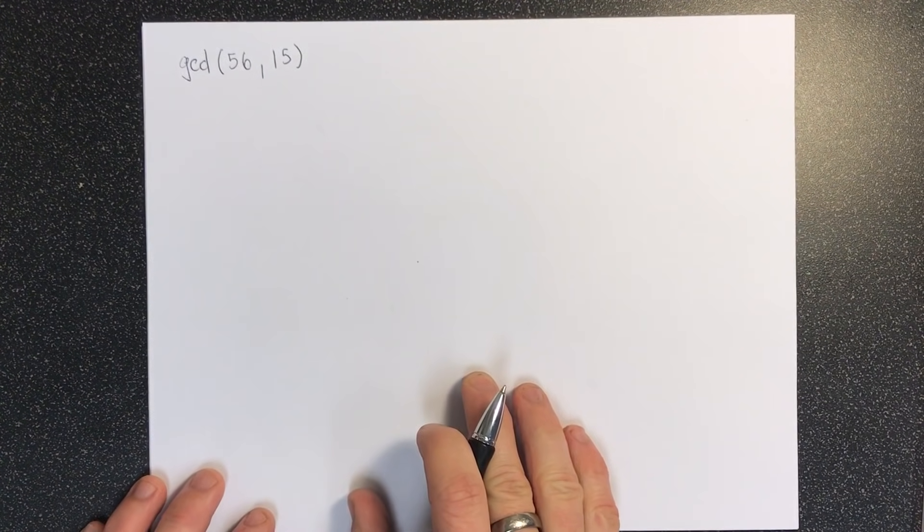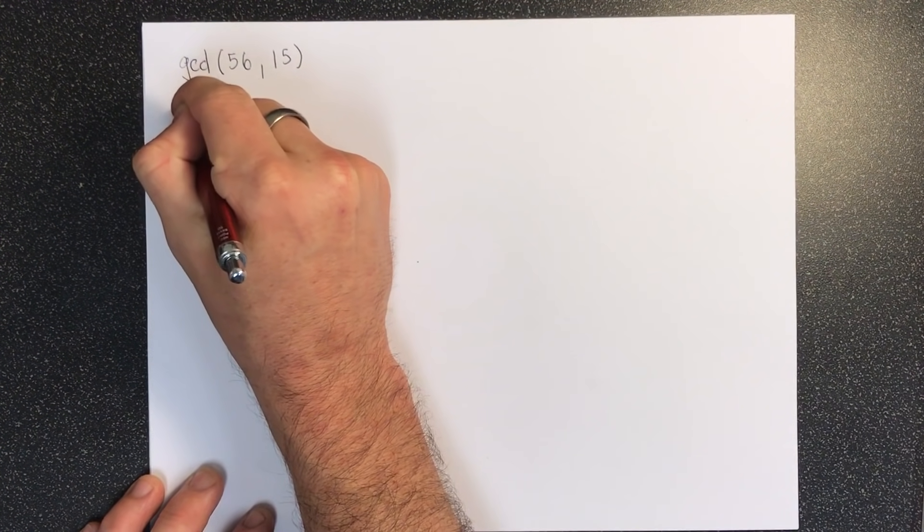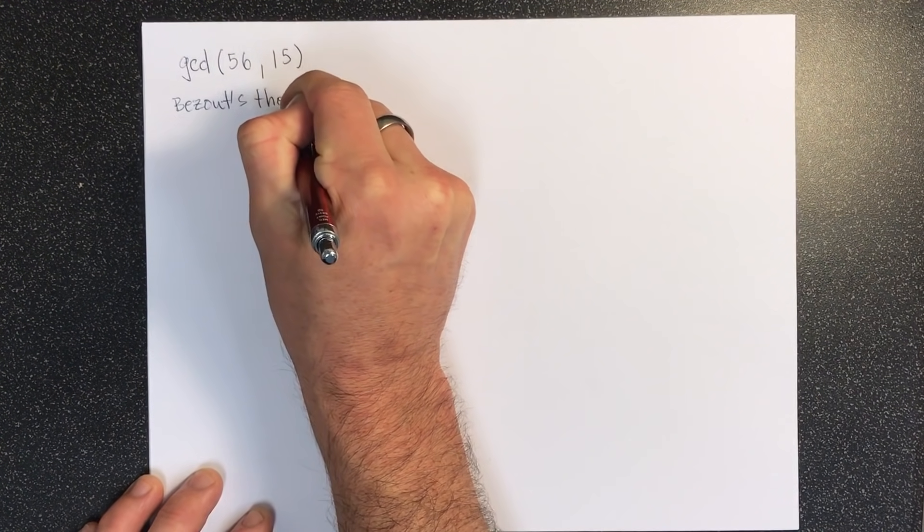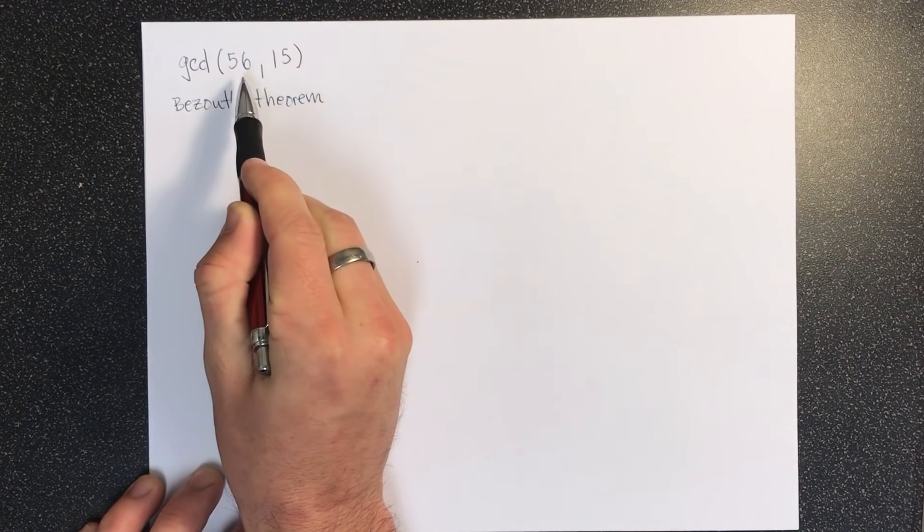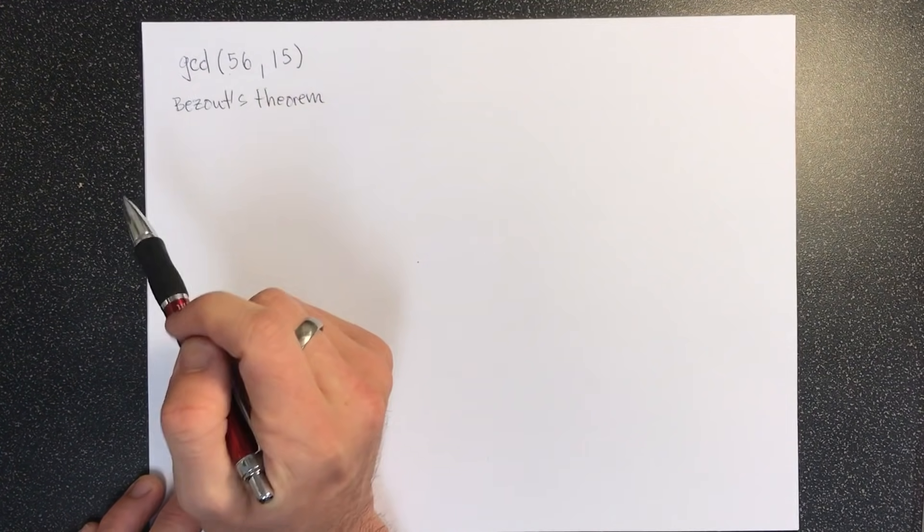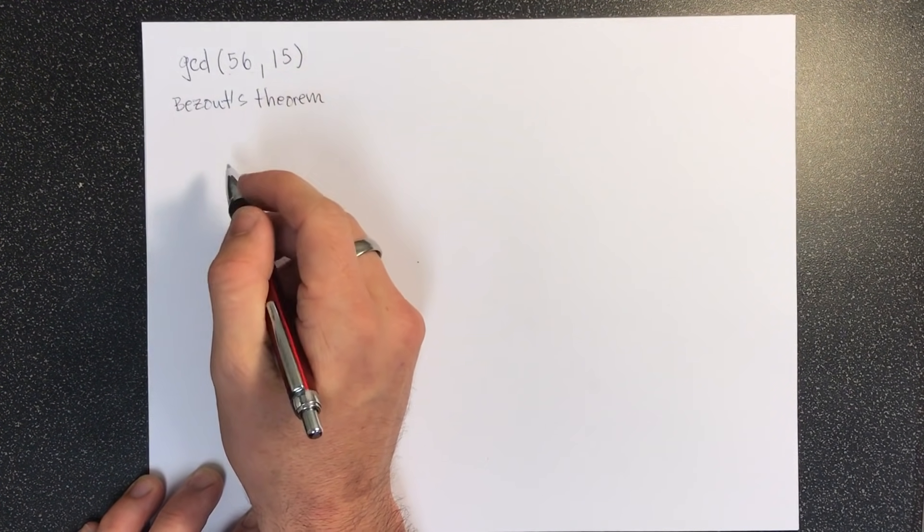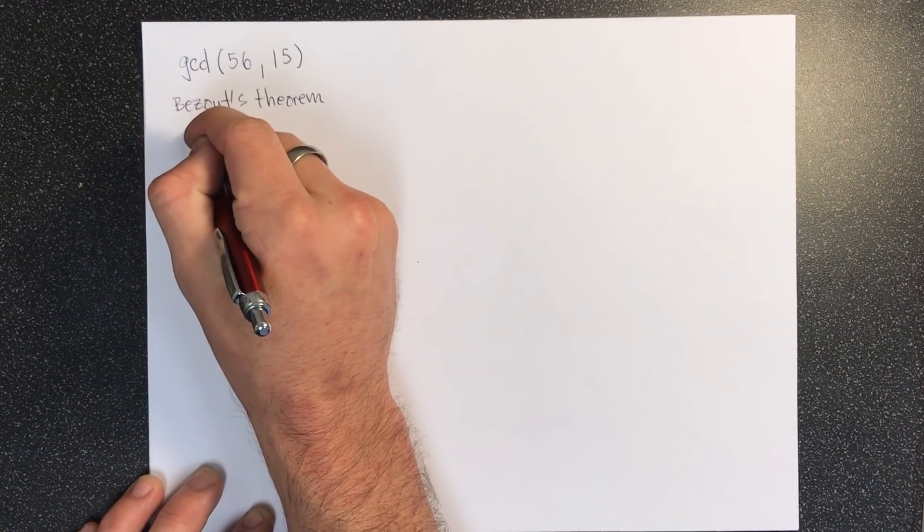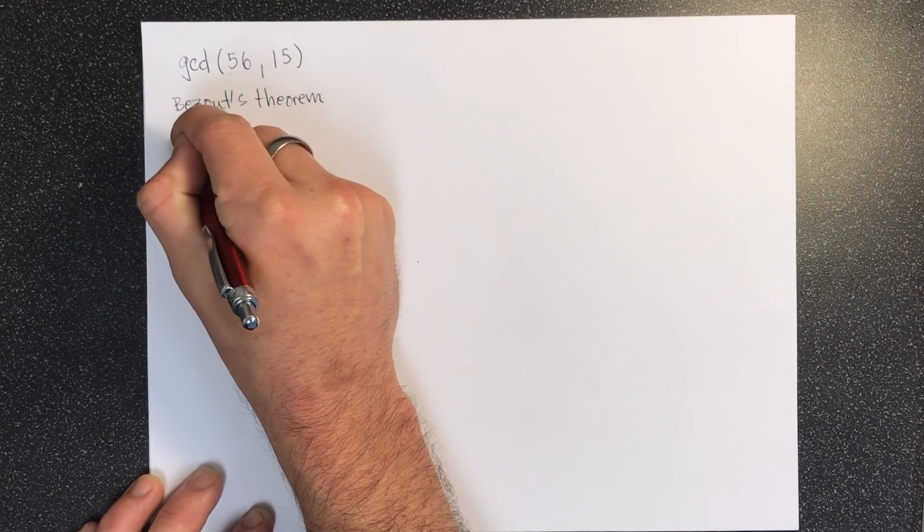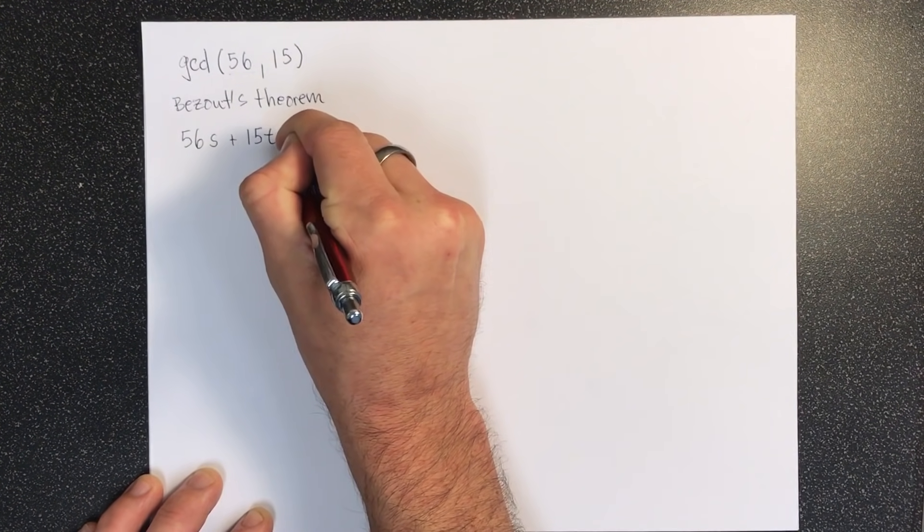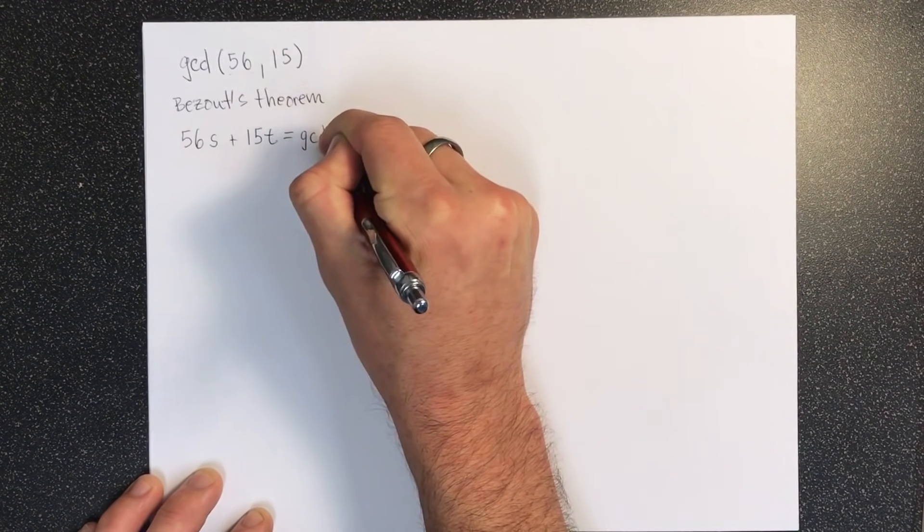So let's say we want to find the GCD of 56 and 15. But remember that Bezout's theorem—for those of you just joining us who aren't taking my class, this is Bezout's theorem—says whenever you're looking for the GCD of two numbers, like 56 and 15, there must always be these integers, let's call them s and t, such that 56 times s plus 15 times t is equal to whatever their GCD is.